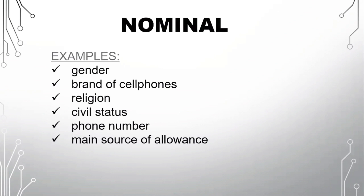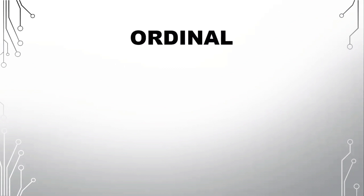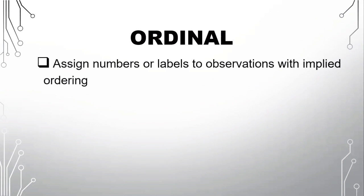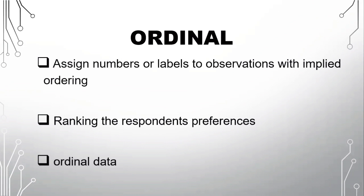Next level of measurement is the ordinal scale. We assign numbers or labels to observations with implied ordering, ranking the respondents' preferences and ordinal data. So in this level of measurement, it's just like nominal scale, but the only difference is in here there is an order. So from the word itself, ordinal, there's an order to follow.